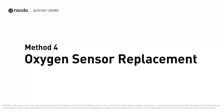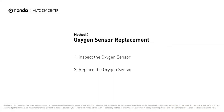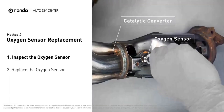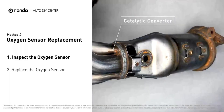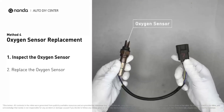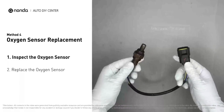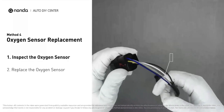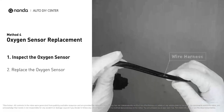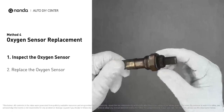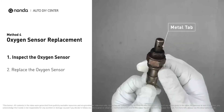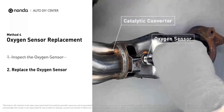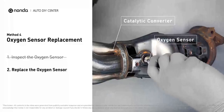Method four: oxygen sensor replacement. Carefully remove the oxygen sensor from the catalytic converter. Visually check the oxygen sensor's electrical connections, wire harness, and metal tabs for any damages. If damages are found, replace the oxygen sensor.